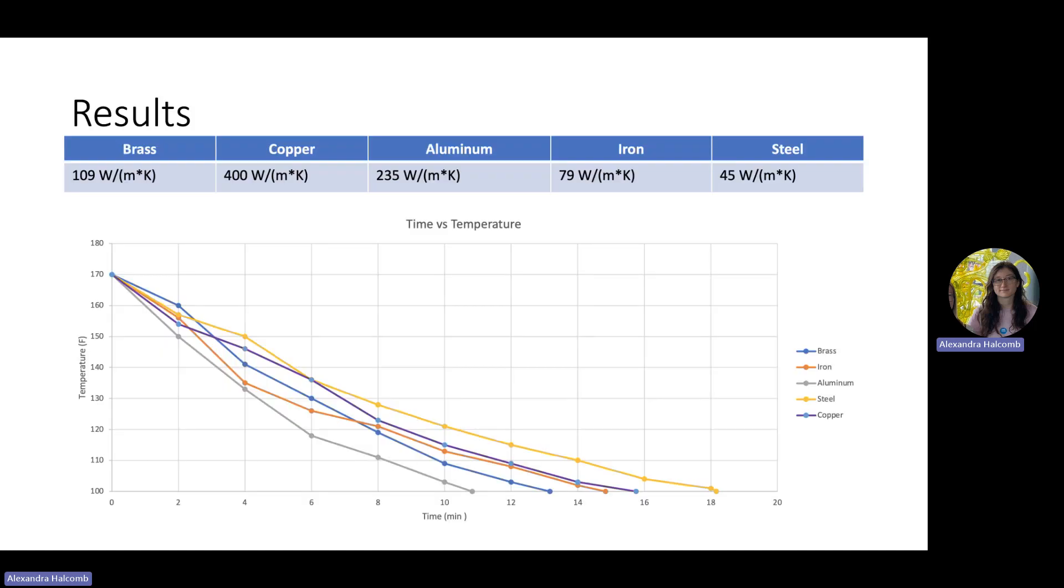As you can see, the shortest amount of time it took to reach 100 degrees Fahrenheit was aluminum, and then it went down to brass, then iron, then copper, and then steel.